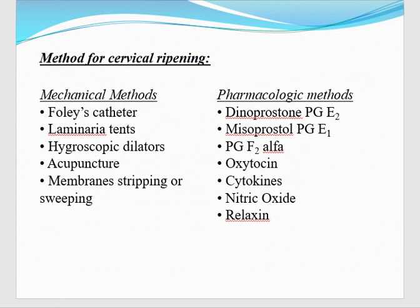Now, what are the methods for cervical ripening? We can divide them into mechanical methods and pharmacological methods. Mechanical methods include Foley catheter, laminaria tents, hygroscopic dilators, acupuncture, and membrane sweeping. Pharmacological methods include prostaglandin E2 (dinoprostone), misoprostol (prostaglandin E1 analog), prostaglandin F2 alpha, oxytocin, cytokines, nitric oxide, and relaxin.